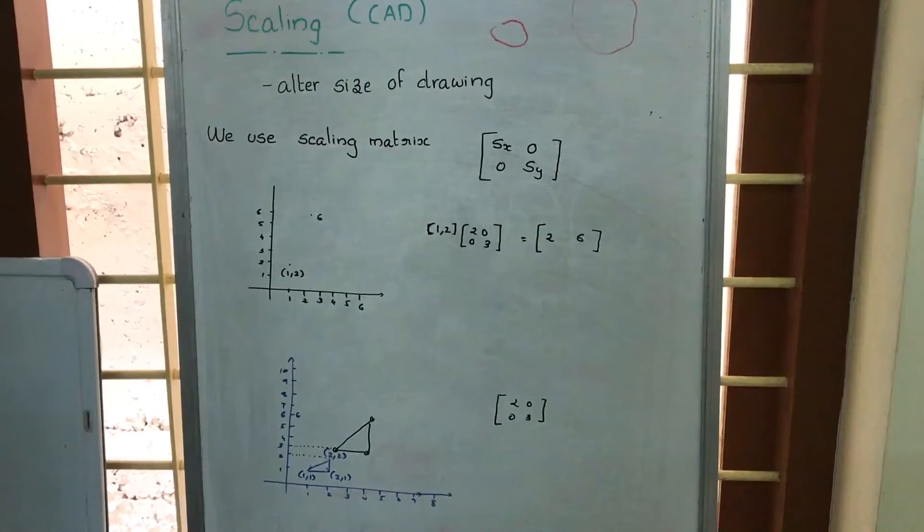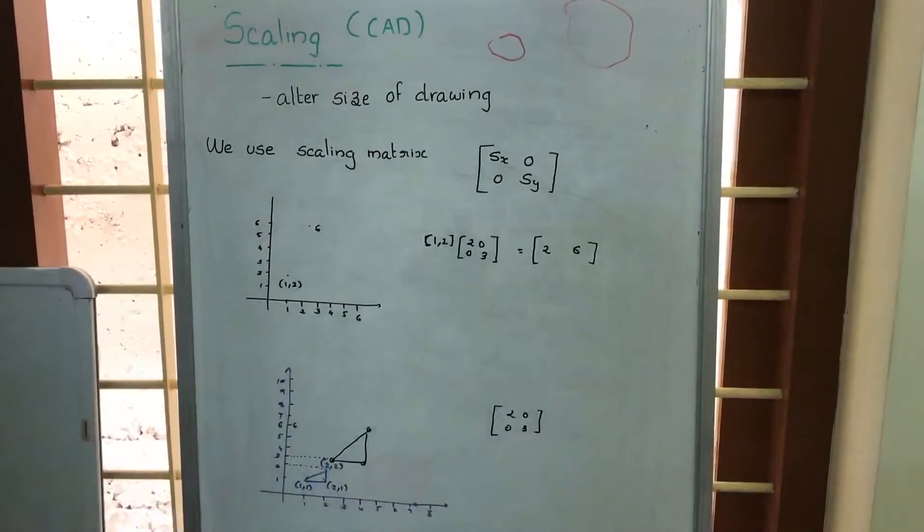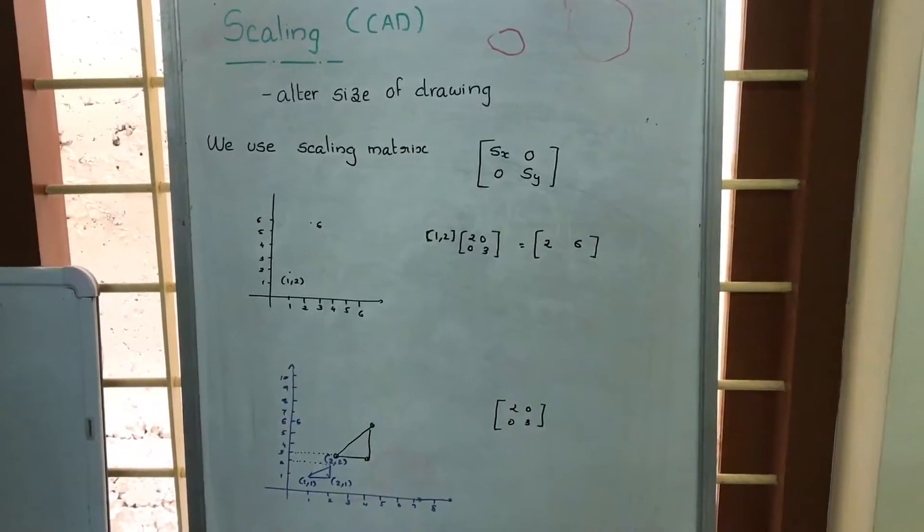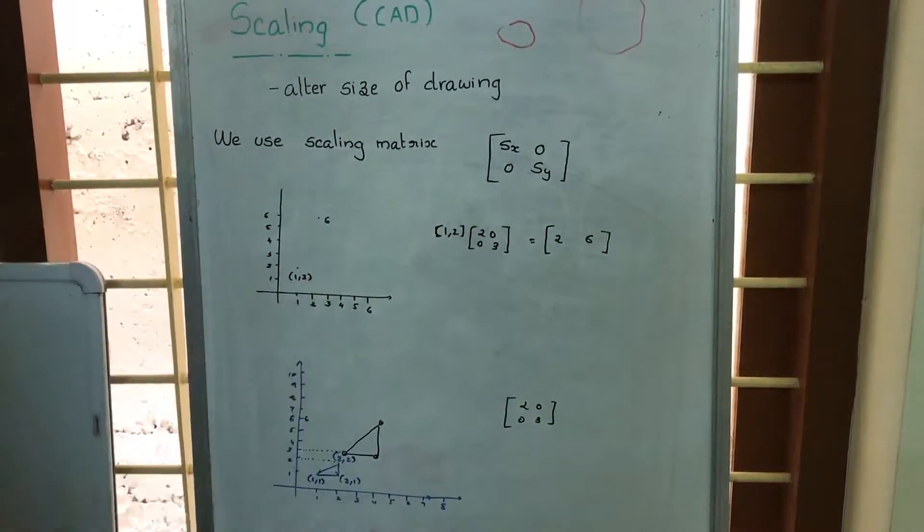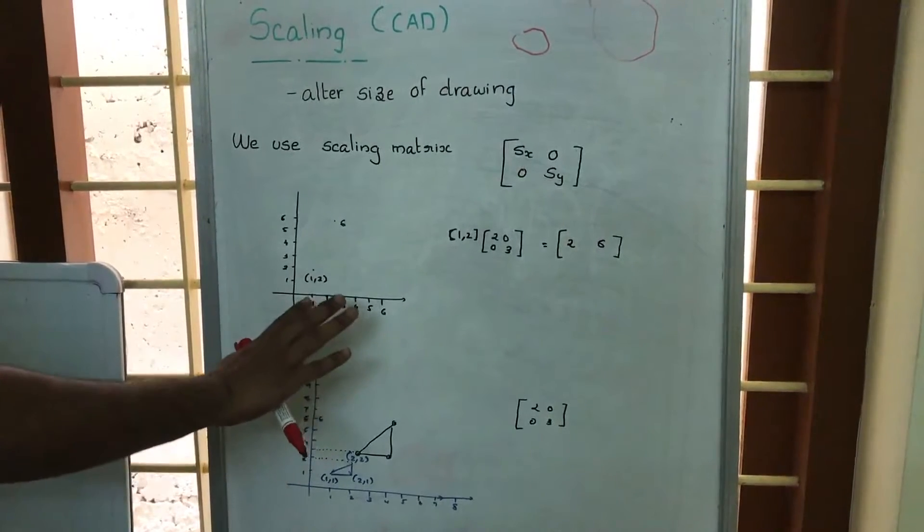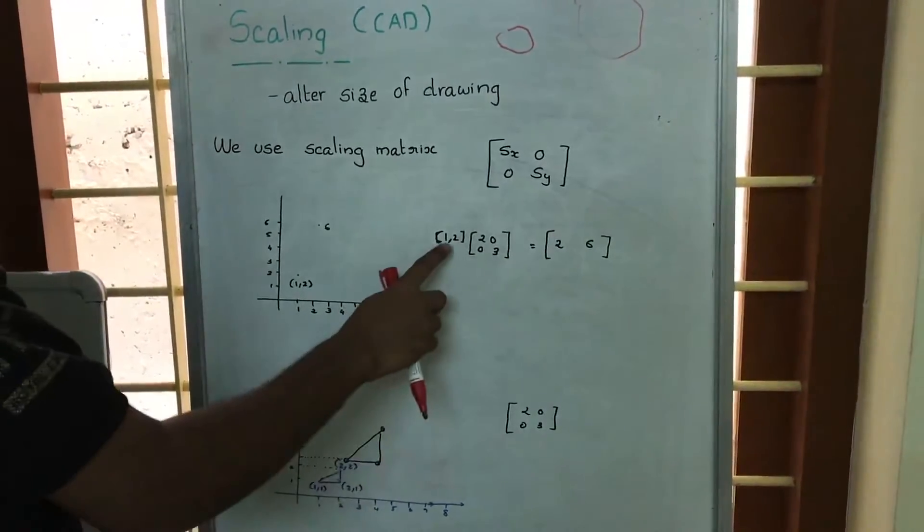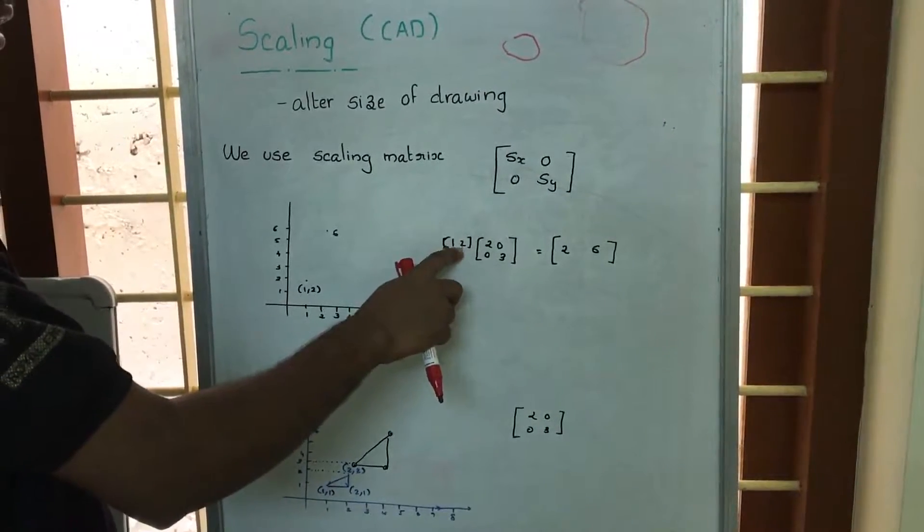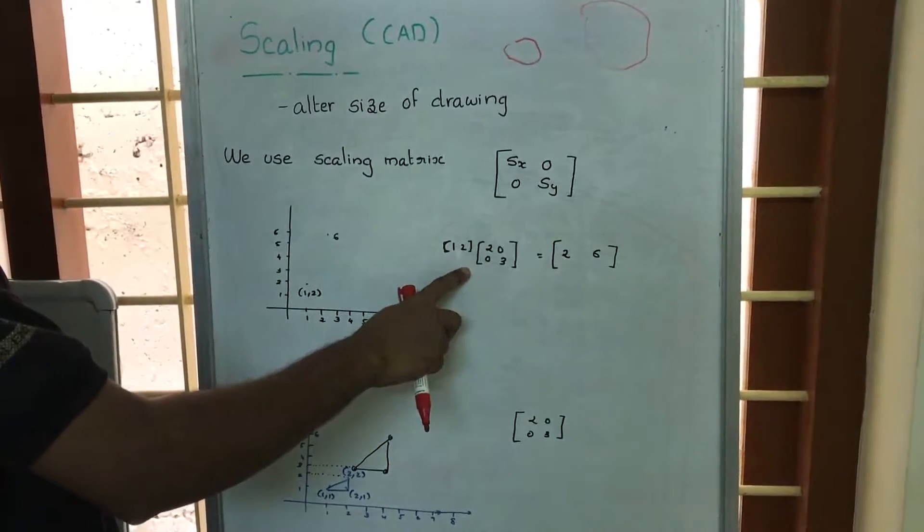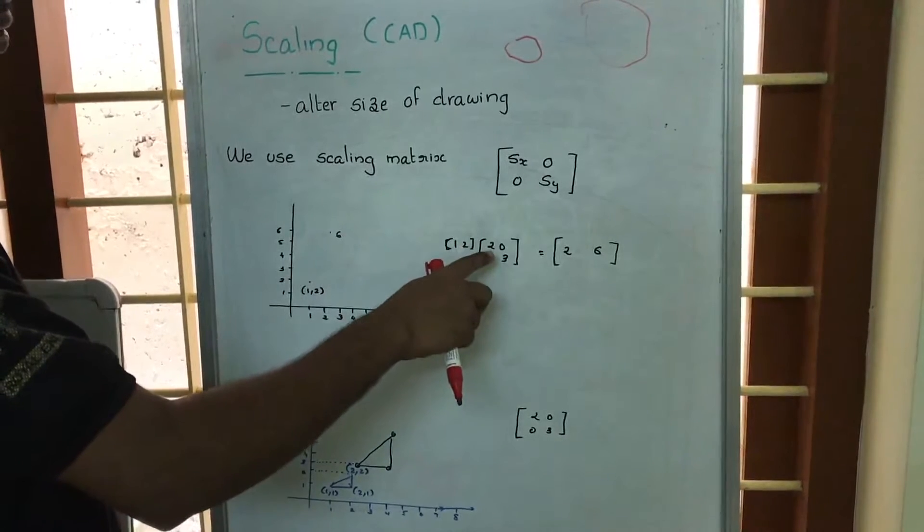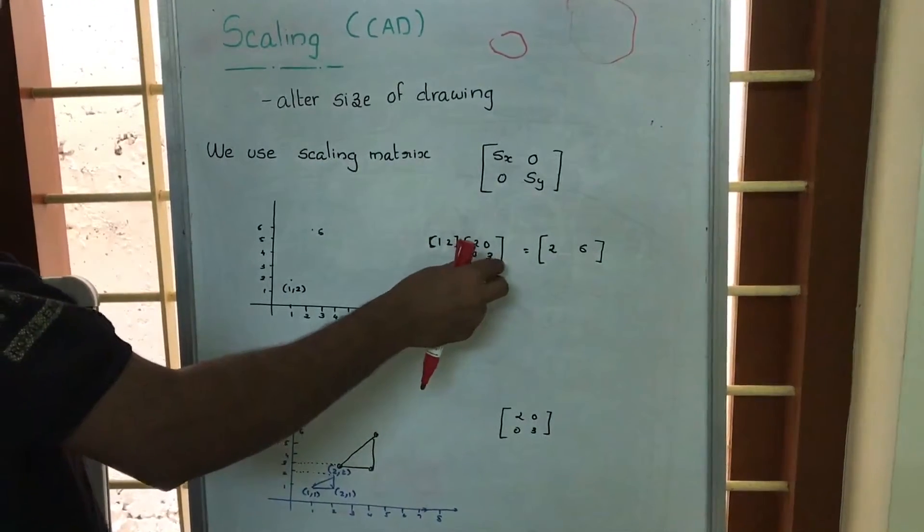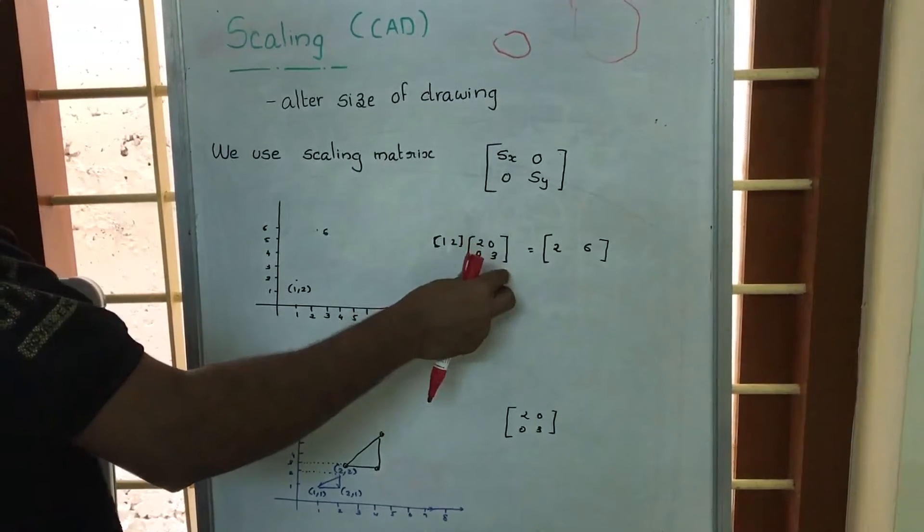The general form of scaling matrix is like Sx 0, 0 Sy. Now we are having two axes and we are having two points. Say first point is 1,2. So this is in matrix form we can represent this 1,2 like this. And we are using a scaling matrix 2,0,0,3. This is the general form of scaling matrix in 2D.